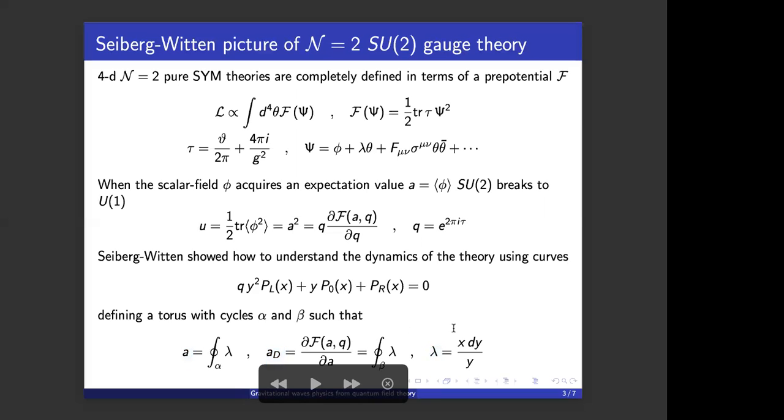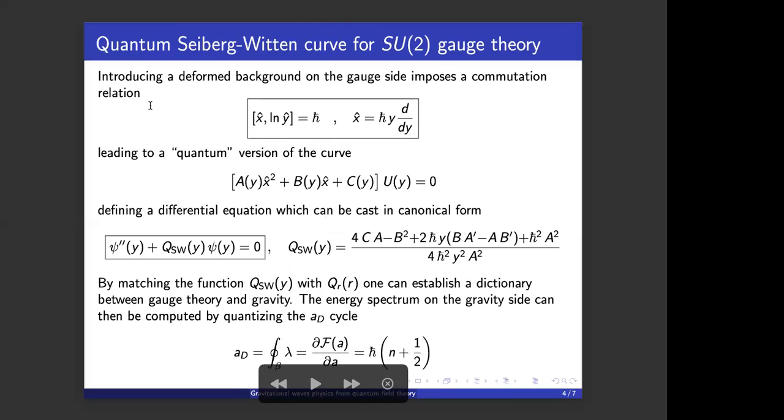Next slide, please. Okay, if one introduces a different background on the gauge side, one also has to impose a commutation relation on this torus manifold, which basically leads to a quantum version of the curve which defines a differential equation of second order for SU(2) which can be cast in canonical form. So what we do is basically match this q function derived from Seiberg-Witten with a q function obtained from the black hole and establish a dictionary. Then the energy spectrum of the solution we were looking for can be concluded by quantizing one of the cycles, for example a_D, in the case we are considering.